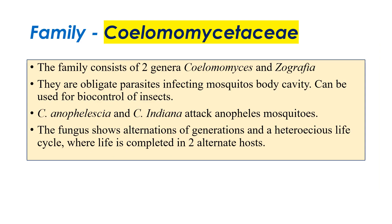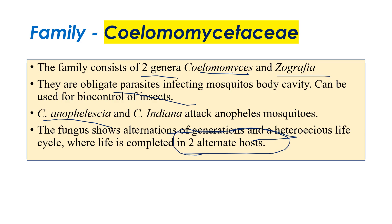The next family is Coelomomycetaceae, consisting of two genera: Coelomomyces and Geografea. They are obligate parasites that infect mosquitoes and can also be exploited as biocontrol agents against mosquitoes. Species like Coelomomyces anophelesiae and Coelomomyces indicus attack Anopheles mosquitoes, which generally cause malaria and dengue. This family also exhibits alternation of generations between diploid sporothalus and haploid gametothallus.